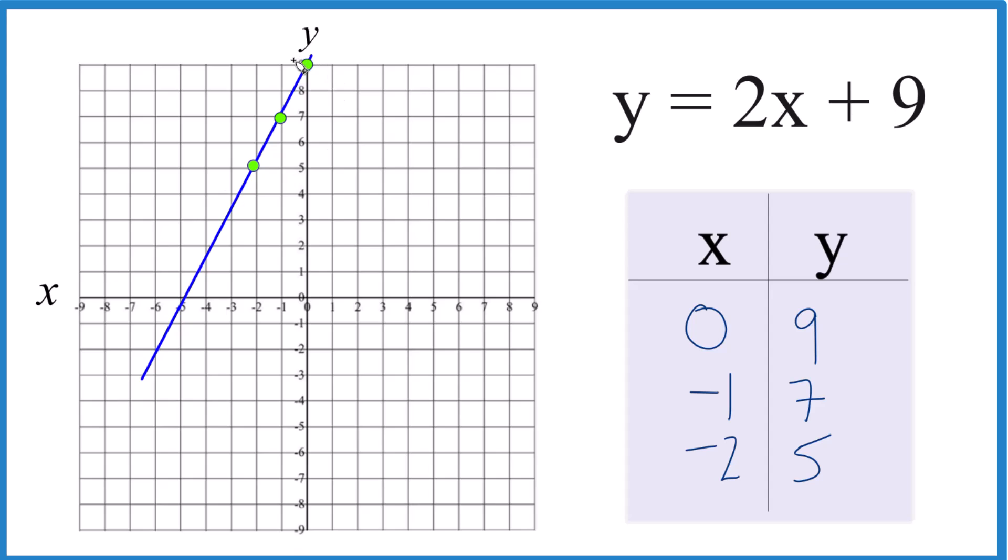Then we could put arrows to show that it goes to infinity, and that's the line for y equals 2x plus 9. Any value you put in for x here, you'll find a value for y. When you graph them, they'll be on this line. That's it. This is Dr. B. Thanks for watching.